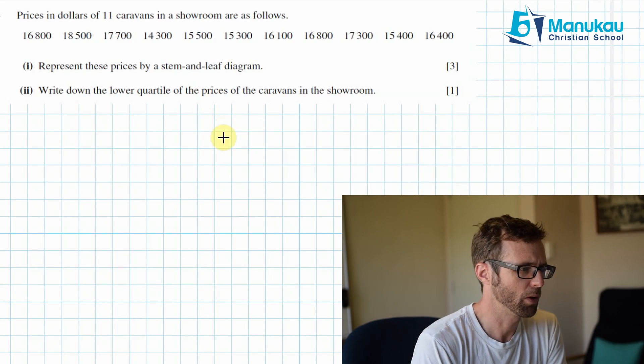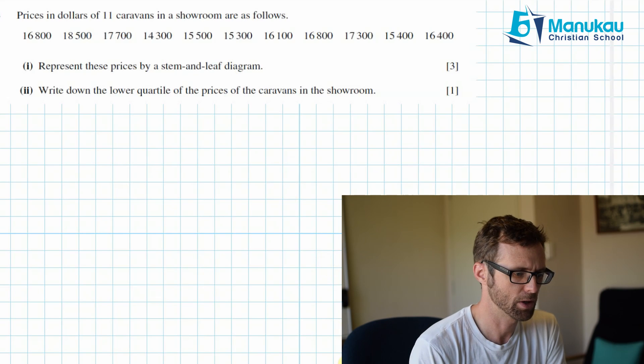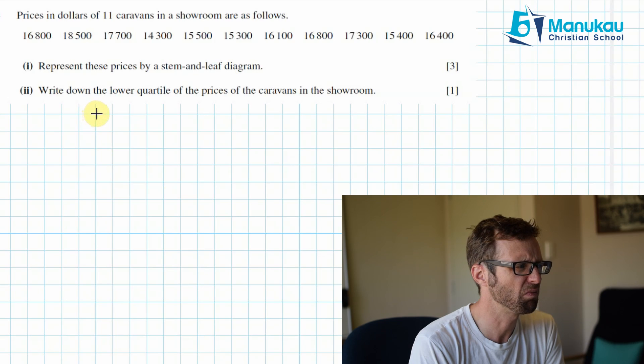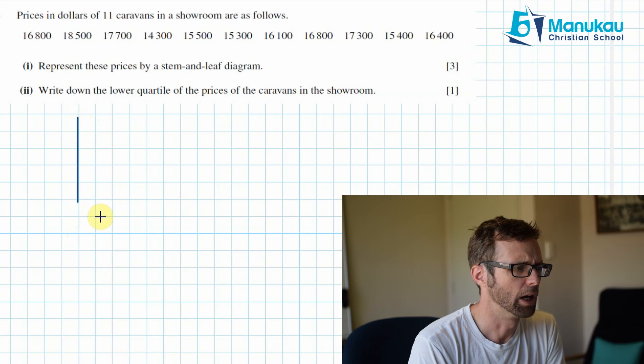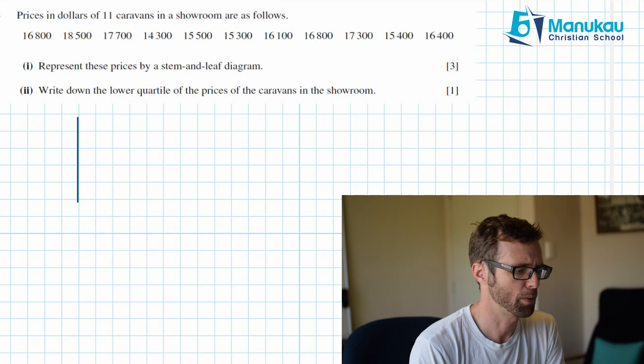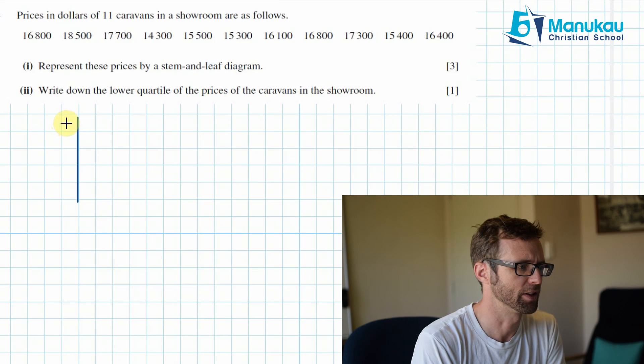Okay, this is worth three marks. Well, my stem and leaf diagram I'm going to, I'm going to pop in a little line here. I can see that the lowest one seems to be about, was it 14,000? Yeah, I think it's 14,300. And our highest is 18,500. So I'm going to pop in numbers like this.